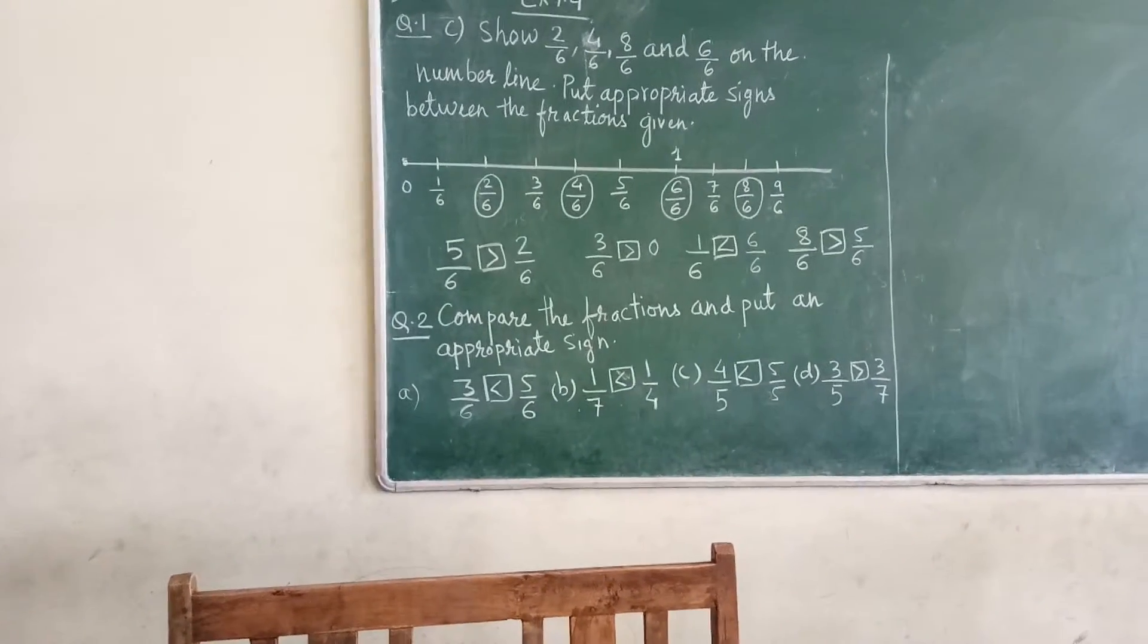Now come to part B. 1 upon 7 and 1 upon 4. Here case is different. Numerators are same but denominators are different.